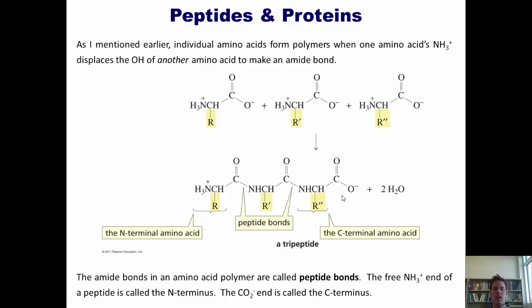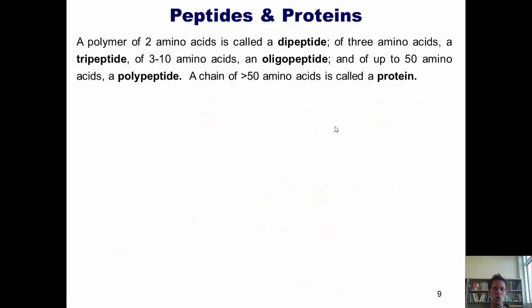By convention, you guys should know that when amino acids are drawn in literature, they are generally almost always drawn going left to right from the N-terminus being at the left and the C-terminus being at the right. This peptide that we've made from these three amino acids incidentally is called a tripeptide. As we've learned recently, a polymer of two amino acids is called a dipeptide. A polymer of three amino acids is called a tripeptide. Of three to ten amino acids is called an oligopeptide. And of up to 50 amino acids is called a polypeptide. A chain of more than 50 amino acids is called a protein.